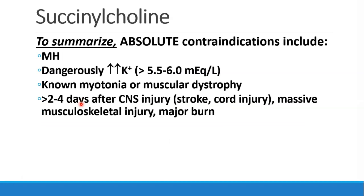To summarize, the absolute contraindications to succinylcholine are: malignant hyperthermia; dangerously elevated potassium levels (greater than 5.5 to 6 mEq/L); known myotonia or muscular dystrophy; and CNS injuries or massive injuries — for the latter, you have roughly 2 to 4 days before the problem begins, so it is safe immediately after injury, but after about 48 hours we should avoid succinylcholine.